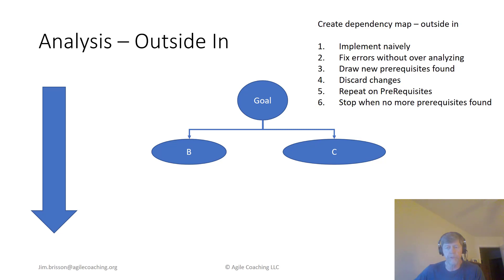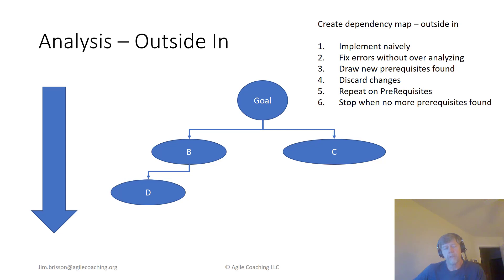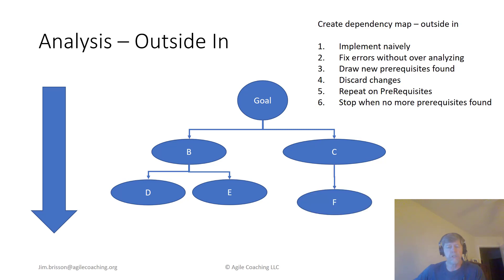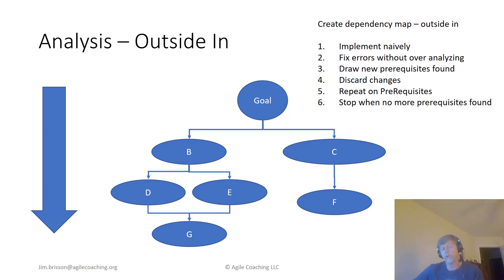Don't give anybody, particularly your manager, the idea that you've already written the code. Then you go to the next level — you write some naive code, simple, not a lot of analysis, and you find that B is dependent upon D and E. C is dependent upon F, as you keep iterating through this. You look at D and find that D is dependent upon G. And lo and behold, E is also dependent upon G. So you come up with your diagram, and you threw away the code at each step. You did not save it.